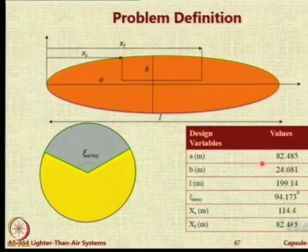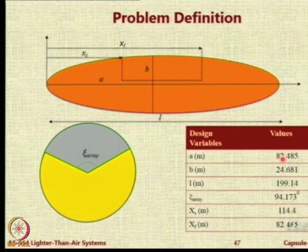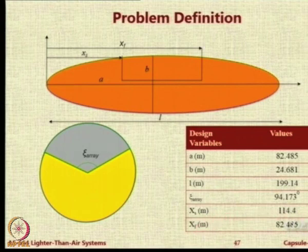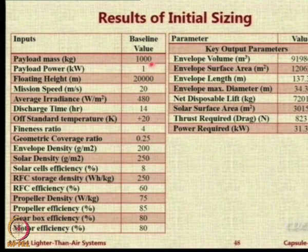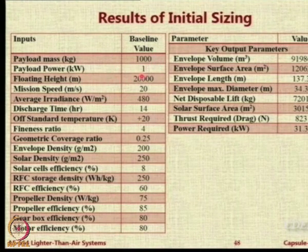For initial sizing, the design parameters indicate that to fulfill the power and payload requirements, you will need a length of around 200 meters, with specific starting and ending positions for the solar cells. For input parameters of 1000 kg payload mass and 1 kilowatt payload power, calculations are made and these are the output parameters.